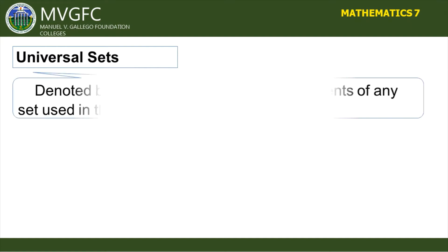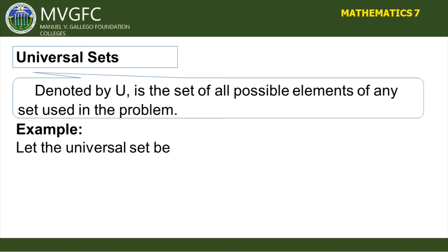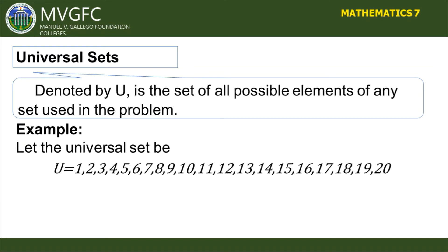The last kind of set is the universal set, denoted by U. The universal set is the set of all possible elements of any set used in the problem. For example, let U = {1, 2, 3, 4, 5, 6, 7, 8, 9, 10, 11, 12, 13, 14, 15, 16, 17, 18, 19, 20}. These are all the possible elements you can find in the universal set.